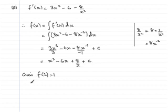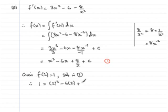What I'd like to do is just call this equation here number 1, and then I can say that given f(2) = 1, just to make it a little bit clearer, we can say 'sub in 1'. So therefore what I get is 1 = 2³ - 6 times 2 + 8 divided by 2 plus that constant.